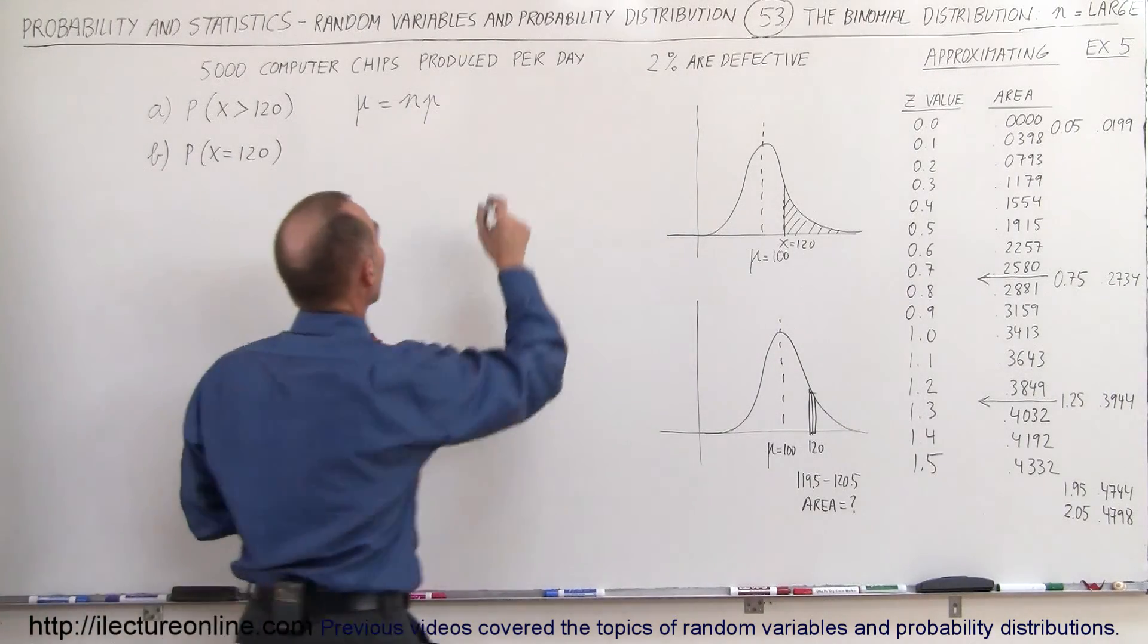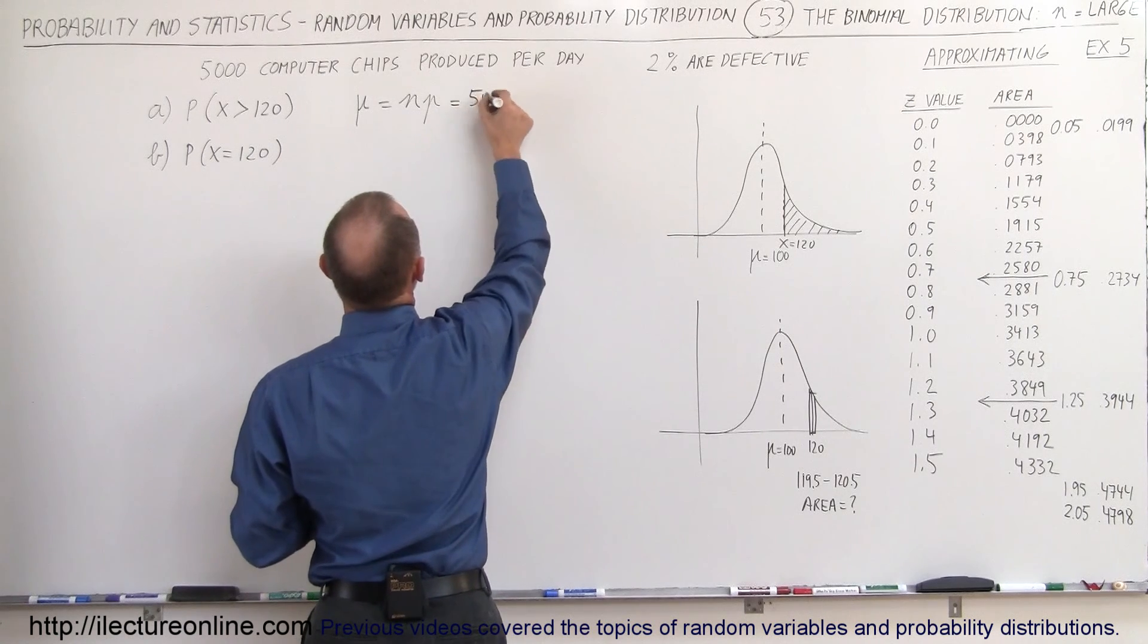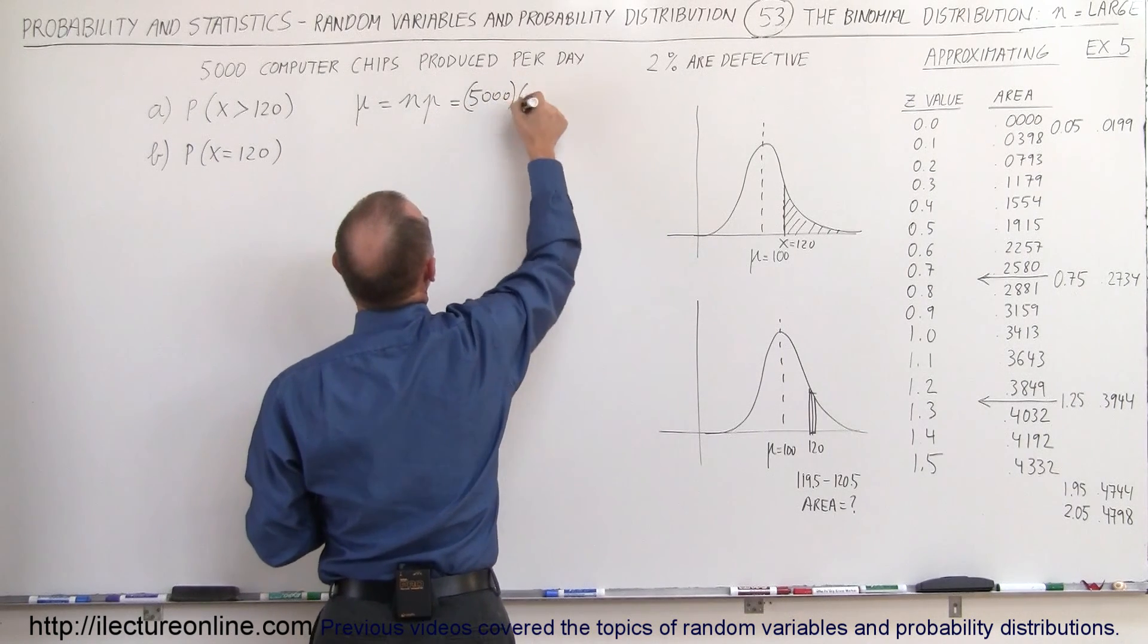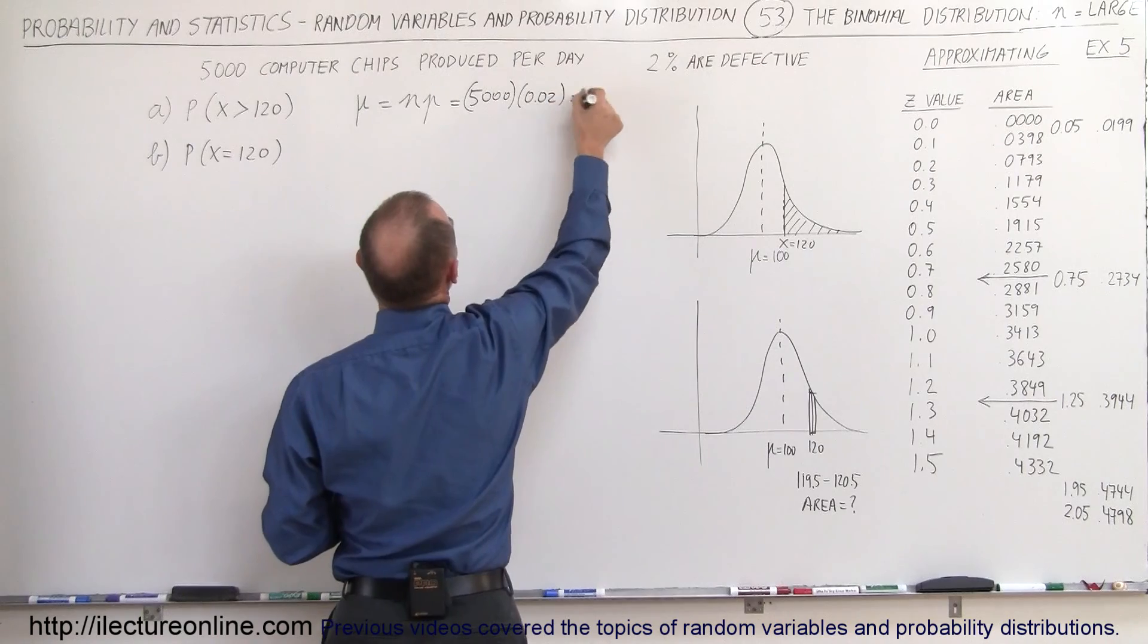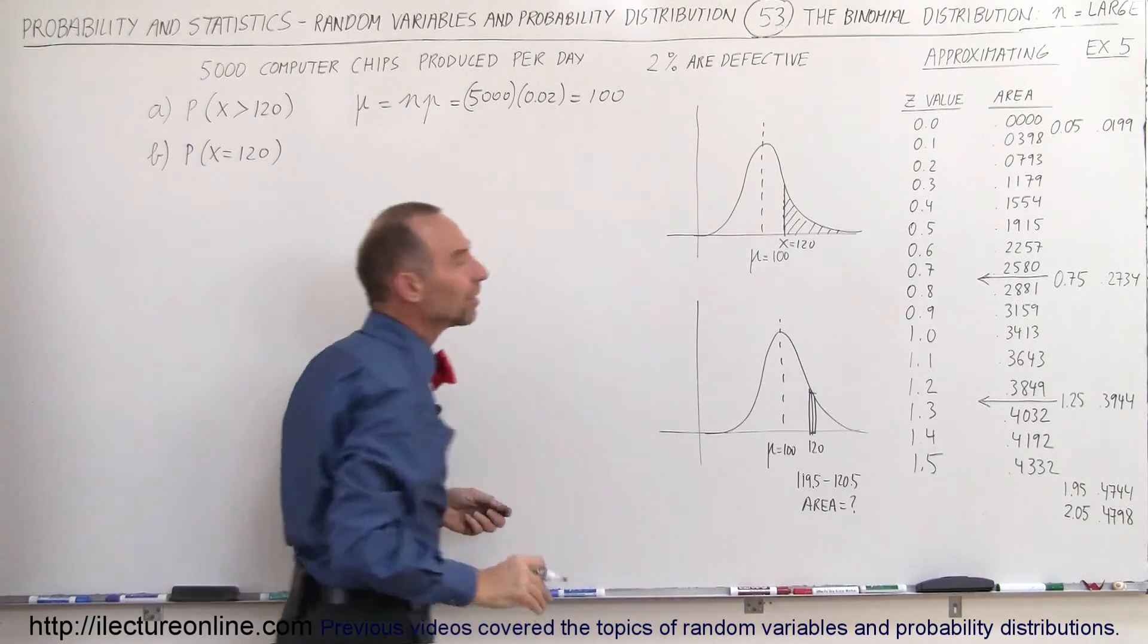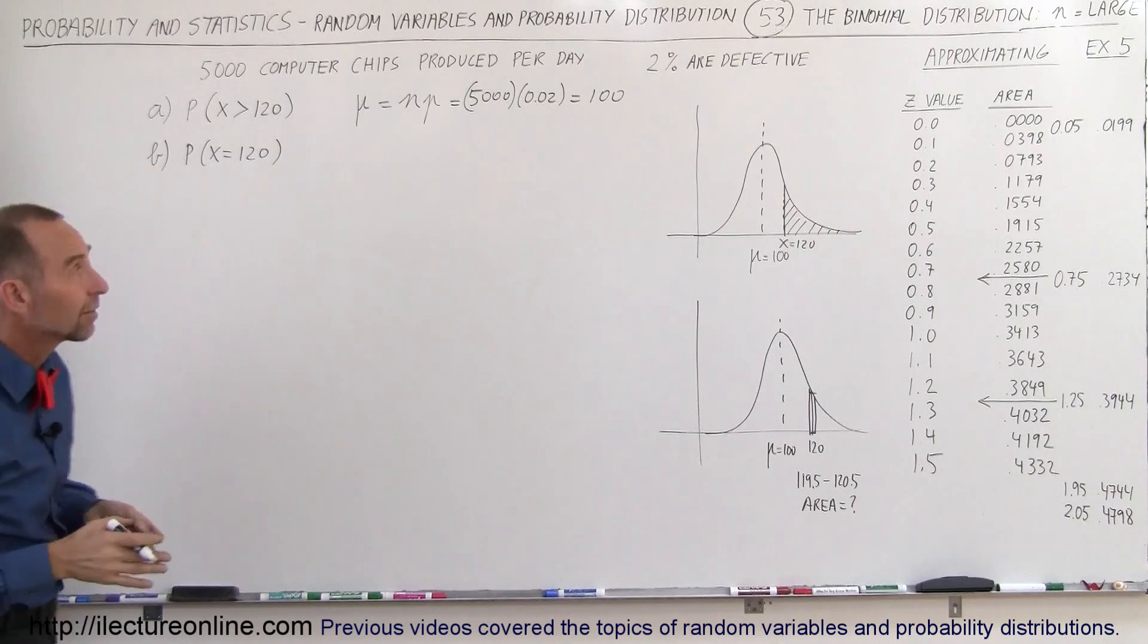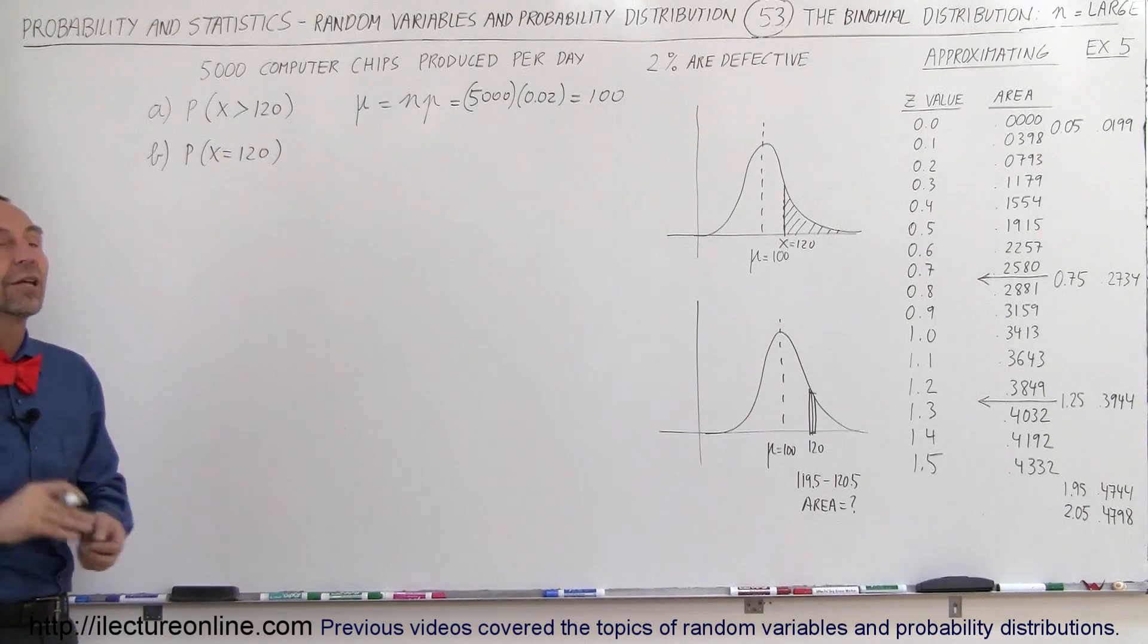So this is equal to 5,000 times 0.02, which is equal to 100. So the expected value, the number of defective chips that we would expect typically, would be 100.